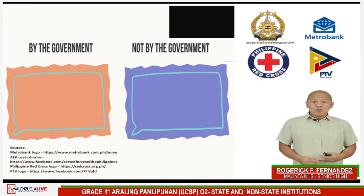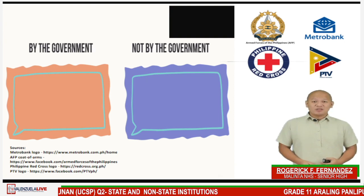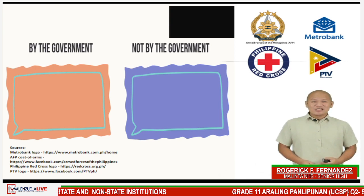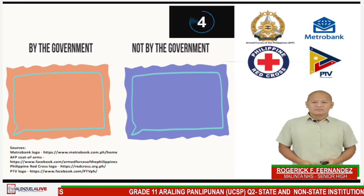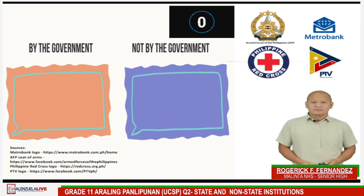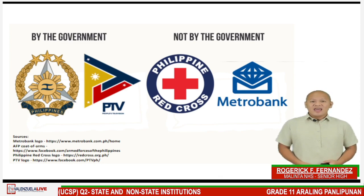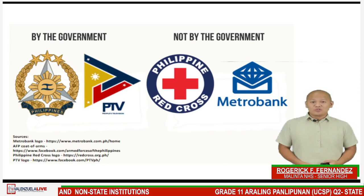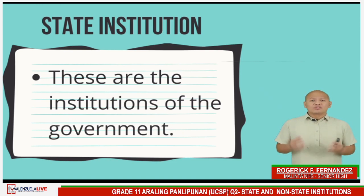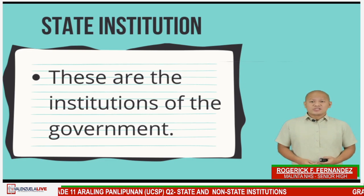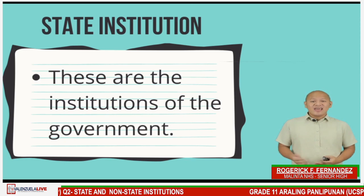This time, you need to identify which of these institutions are government-led and which are not government-led. Type your answers in the chat box. You will be given 10 seconds to answer. If you answered that the Armed Forces of the Philippines and the People's Television Network, Channel 4, are led by the government, and the Metro Bank and the Philippine Red Cross are not government-led institutions, then you got everything correct. From the logo quiz activity, we can infer that there are institutions devoted to the promotion of a particular cause or program, which can be government-led or not. We call them state institution and non-state institution.